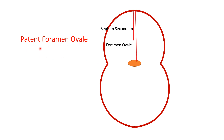Patent foramen ovale is another type of atrial septal defect. The ostium secundum, when overlapped by septum secundum, is called the foramen ovale. Blood from the right atrium passes through the ostium secundum to the left atrium. This is normal in fetal life, but sometimes the foramen ovale rarely persists after birth — and when it does, this is the patent foramen ovale type of atrial septal defect.